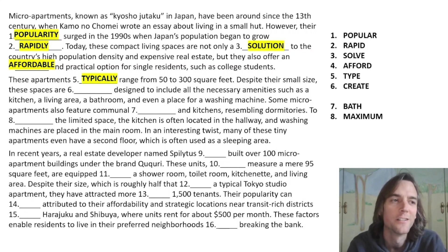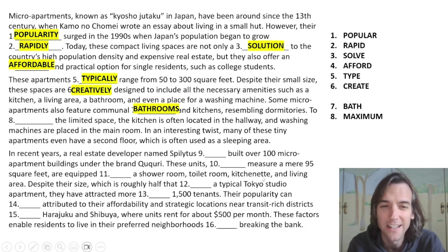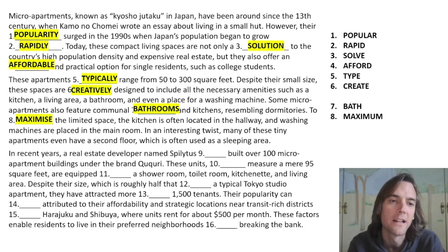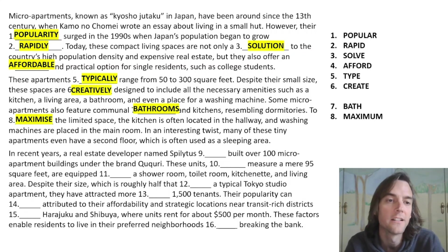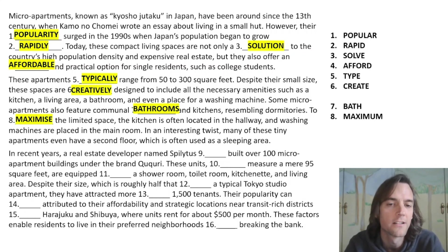Micro apartments typically range from 50 to 300 square feet, which is very small — smaller than the room I'm in now. They are creatively designed to include everything you need, such as bathrooms — a little trick there, it had to be plural because it says 'kitchens,' not 'a communal.' Then we want to 'maximize the limited space' — that's one I've seen on C1 exams before, and it came up in this real, normal text.